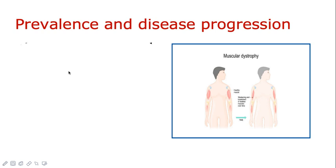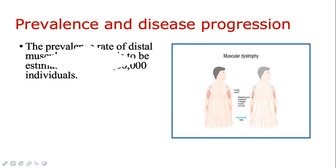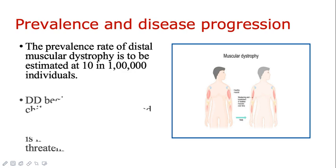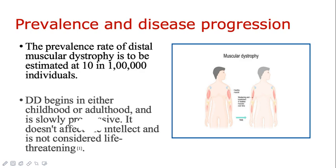The prevalence rate of DD is that it affects 10 in 1 lakh individuals worldwide. Mostly children or adults are affected, and it is a slow progressive disorder. It does not affect the intellectual capacity of the brain and hence is not considered life-threatening.